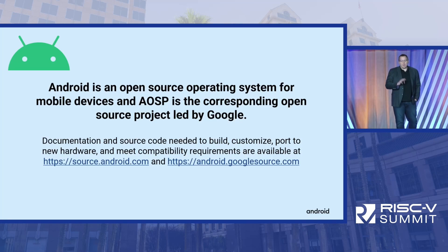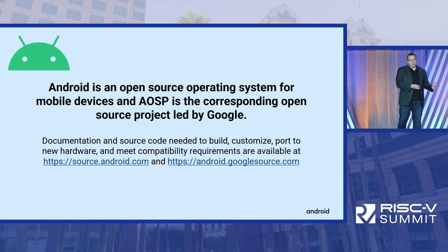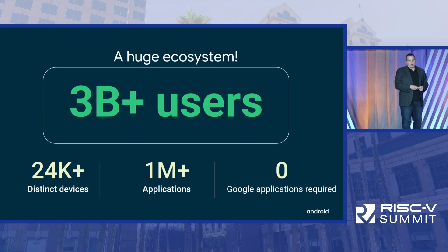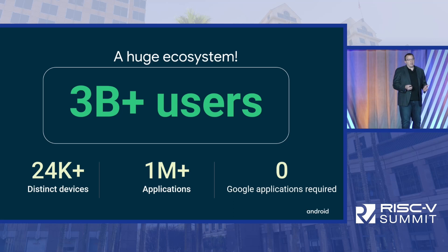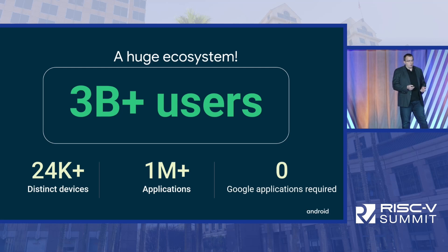First, a little bit of terminology. Android is the open source operating system itself, and the Android open source project, or AOSP, is everything that you need to bring the Android operating system to your device. Android has a really huge ecosystem — over 3 billion users, growing by double-digit percentages year over year — and that's just the devices that use all of the Google suite of applications and services. But the most interesting thing about the ecosystem is that it isn't just a handful of devices from one or two manufacturers. We have more than 24,000 distinct devices from over 1,300 different vendors, and that grows year over year as well.